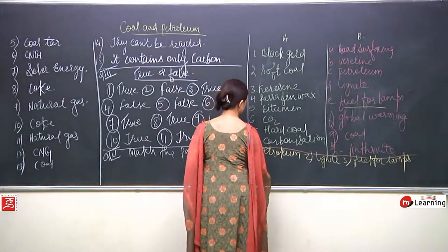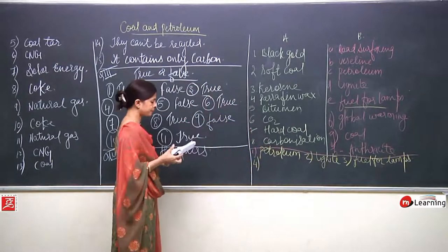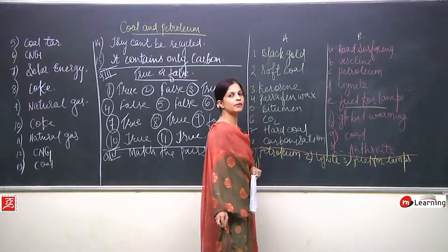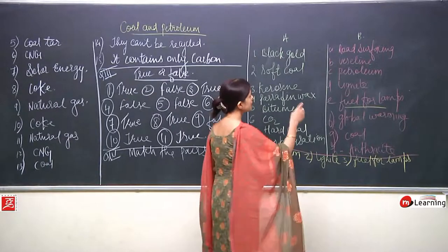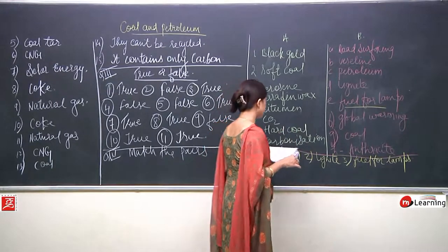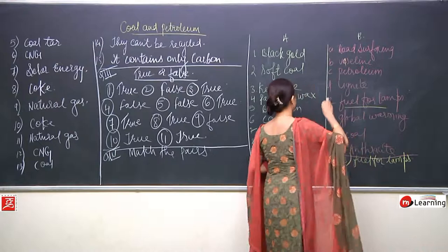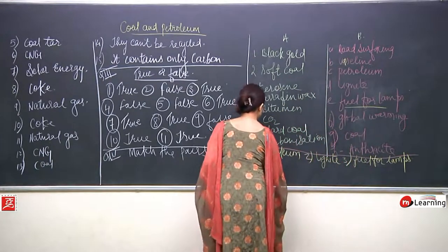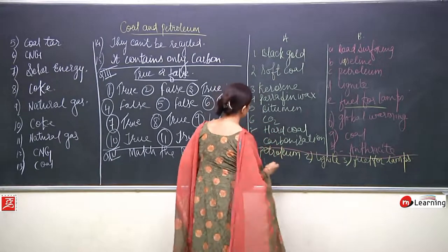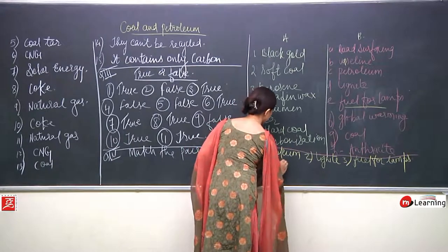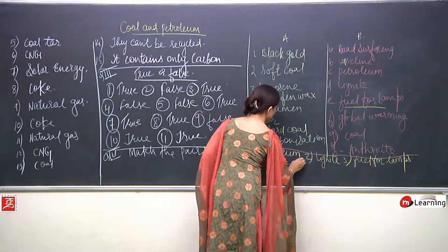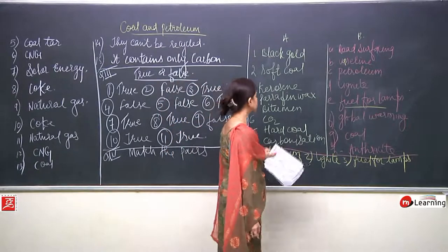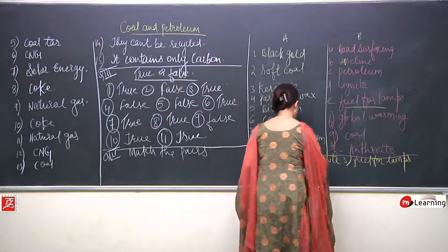Now come to the fourth one — paraffin wax. We all know paraffin wax; what is it? It is vaseline. So the fourth one is vaseline. Now come to the fifth one — bitumen. We have discussed bitumen is used for road surfacing. So the fifth one is road surfacing.